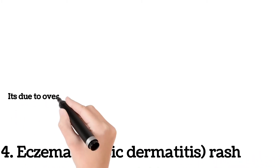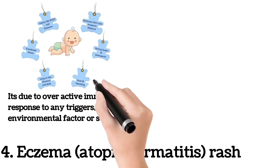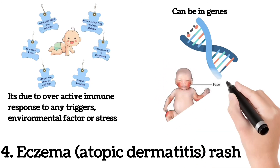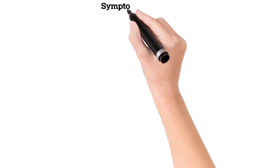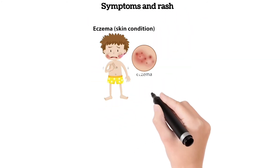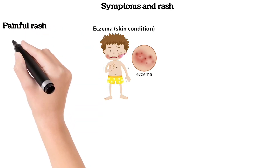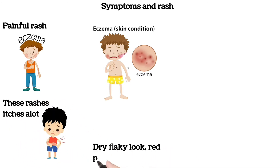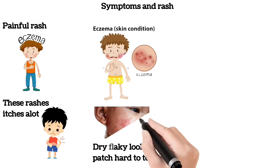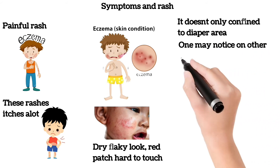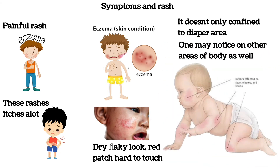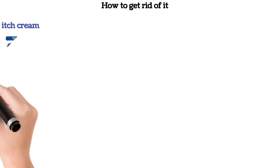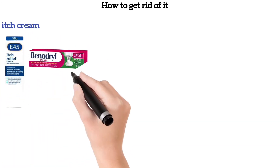Apply local anesthetic gel to keep the area less painful. Eczema or atopic dermatitis rash is due to an overactive immune response to any triggers, environmental factors, or stress, and can be genetic as well. Symptoms: painful rash that itches a lot, dry flaky look, red patches, hard to touch, and it doesn't only confine to the diaper area — one may notice it on other areas of the body as well.